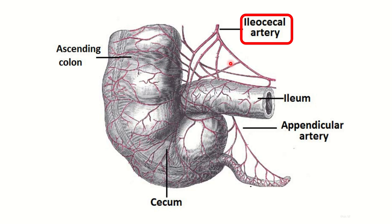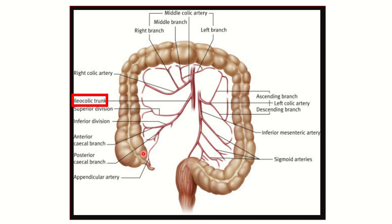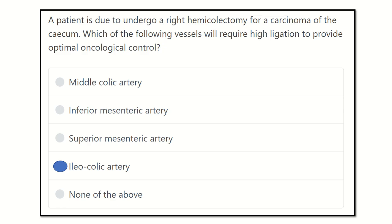For complete removal and oncological control, we have to ligate the blood vessel at a high level, above where it branches. Here we can see the cecum is supplied by the ileo-colic artery, and we must ligate up to this point to prevent tumor spread, because the lymphatics are present throughout this area.